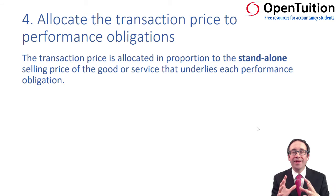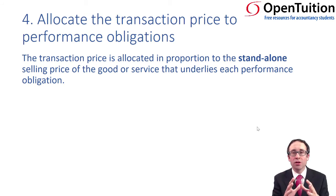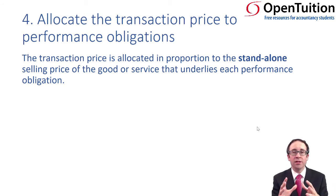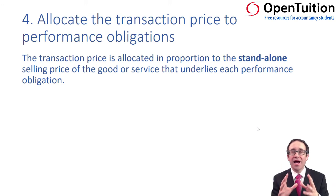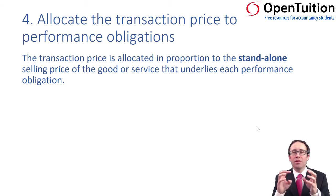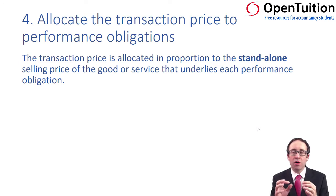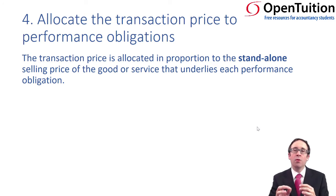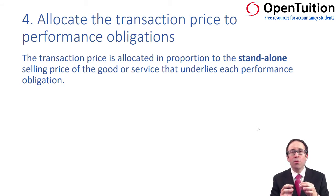When we're allocating that transaction price across the separate performance obligations, we need to allocate it based upon the stand-alone price of each of those obligations. We will need to look at the total transaction price, which is usually less than buying the two performance obligations separately.